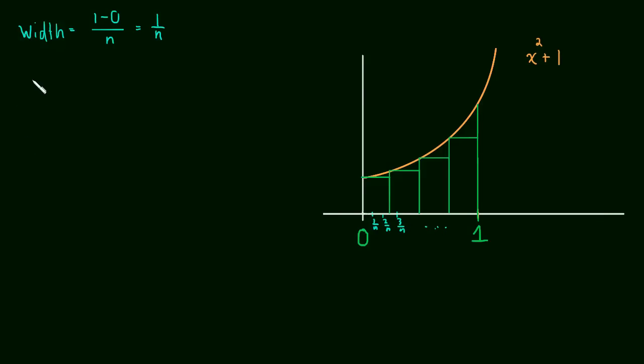Now the key here, the key difference is what is the height of the very first rectangle? Well, it's the height of the left endpoint, right? The height of the very first rectangle is the height of the left endpoint. So here it's f of 0 is the height of the first rectangle.